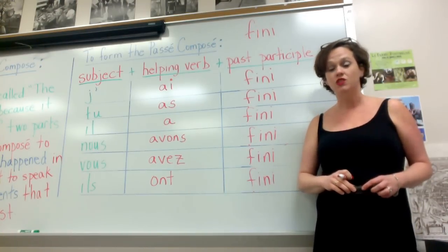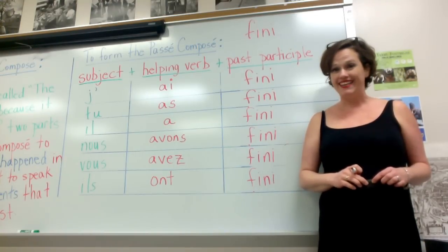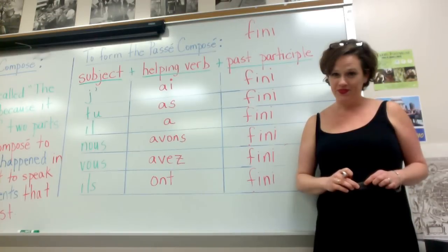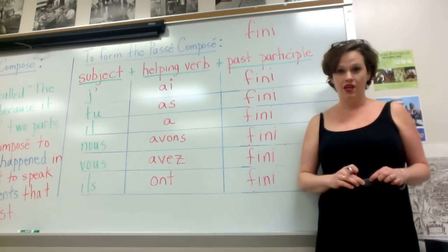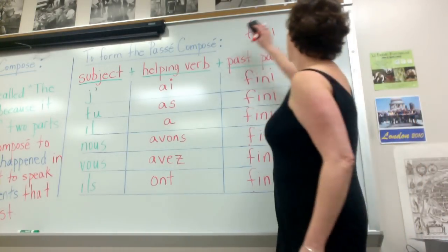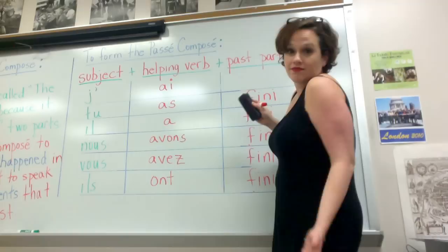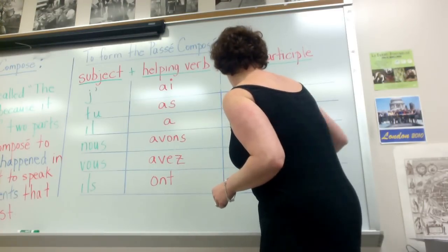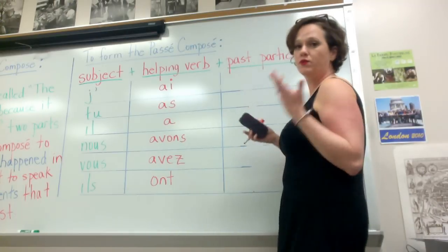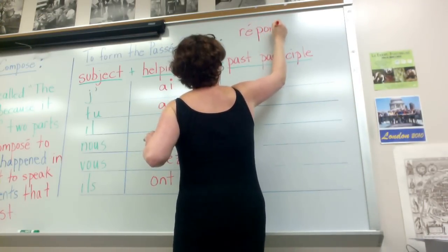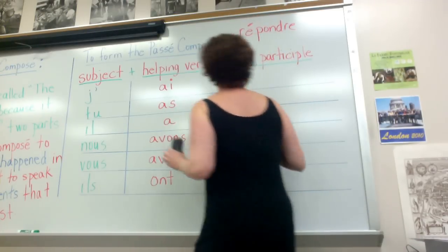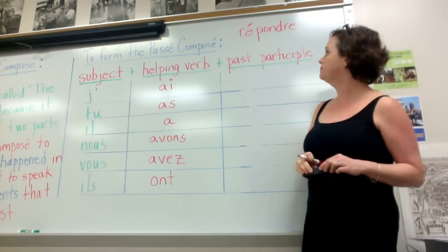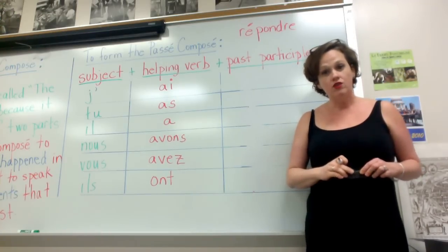All right, so we have one more group left. Do you remember what the third group of verbs is? It's the verbs that end in RE. Can you think of any? How about répondre? To respond, to answer. We also have attendre that you maybe have learned. So let me erase these and we'll get on to our third group. And then guess what? That's it. Those are the three main groups of verbs. Okay, so what did we say? The verb répondre. Now, you remember what this form of the verb is called? It's the infinitive. Okay? Répondre. To answer. To respond.